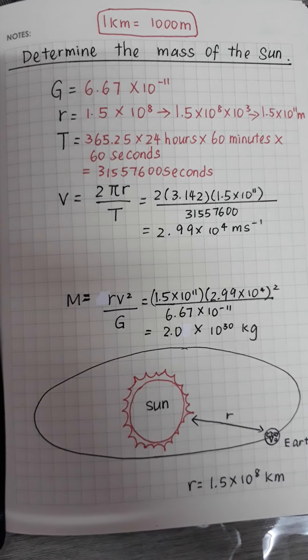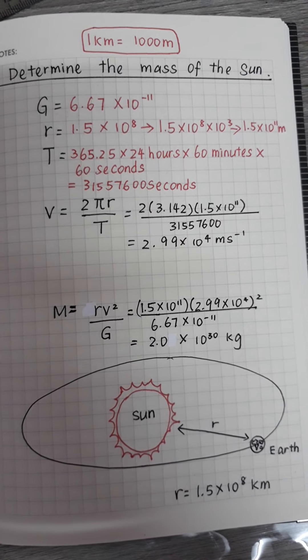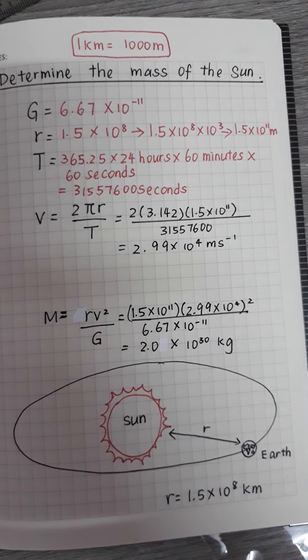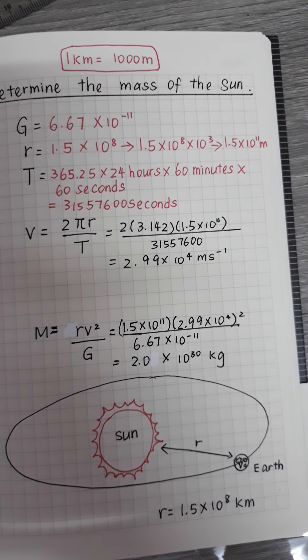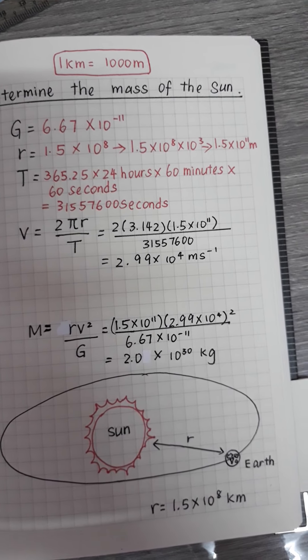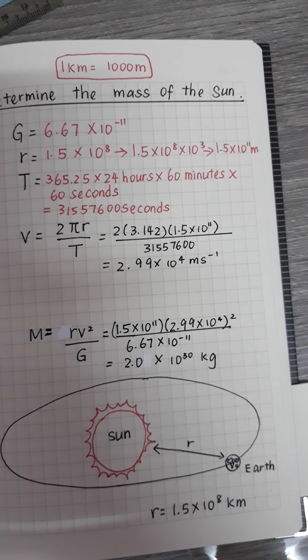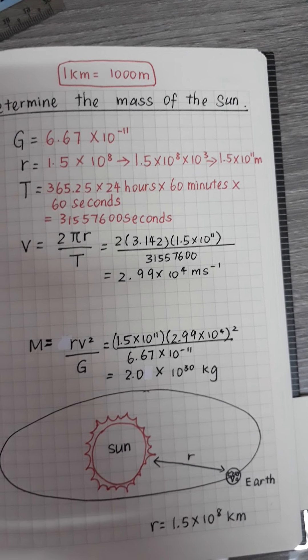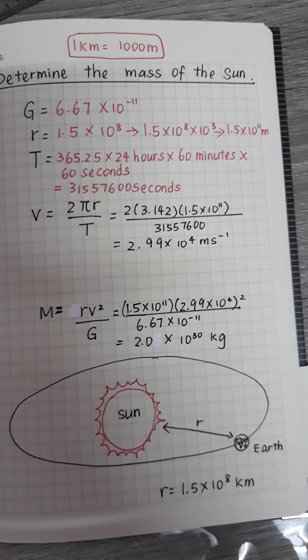To find the mass of the sun, we have to use M equals r v square over G. r is 1.5 times 10 power of 11, v square is 2.99 times 10 power of 4 squared over 6.67 times 10 power of negative 11, equivalent to 2.0 times 10 power of 30 kilograms.